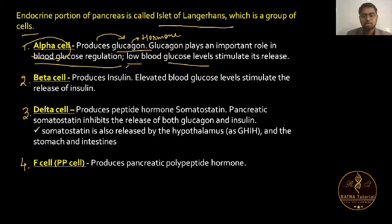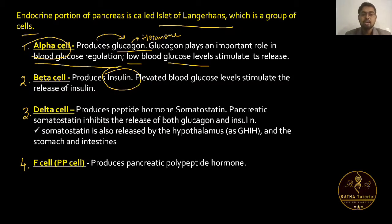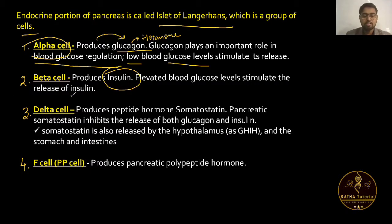Beta cells produce insulin. Insulin is a very important hormone, and its deficiency causes diabetes. Elevated blood glucose levels stimulate the release of insulin.